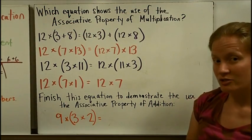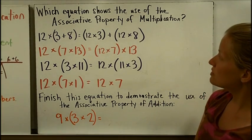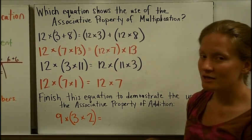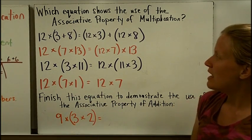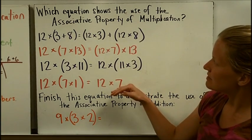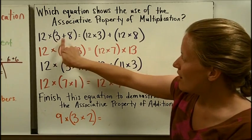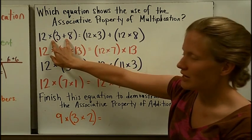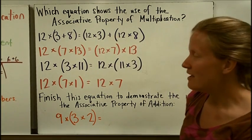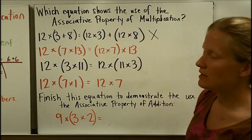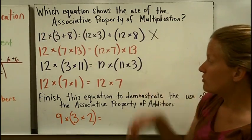Let's look at a few questions that use our knowledge of properties. Which equation shows the use of the associative property of multiplication? The associative property should remind you of people hanging out in groups, or parentheses. Looking through these options, the first one has a mixture of multiplication and addition on both sides — because of that, it is not representing the associative property. It has to be all addition or all multiplication all the way across.